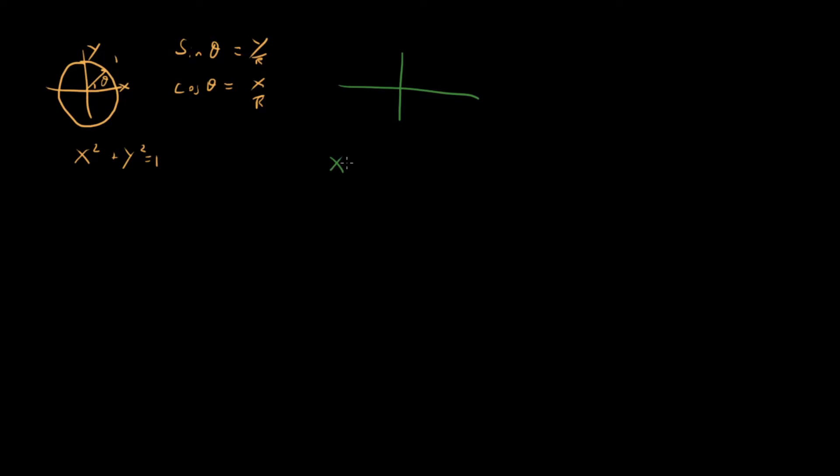Let's look at an ellipse of the form x squared over a squared plus y squared equals 1. So I'm going to say a is greater than 1. So a is the semi-major axis.